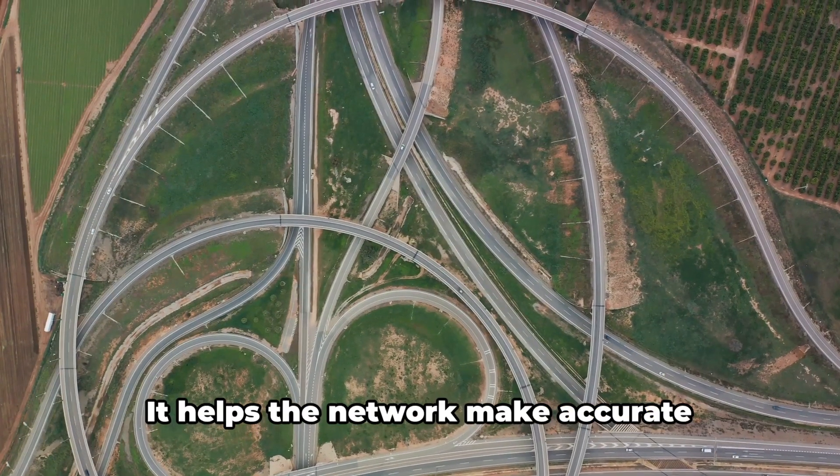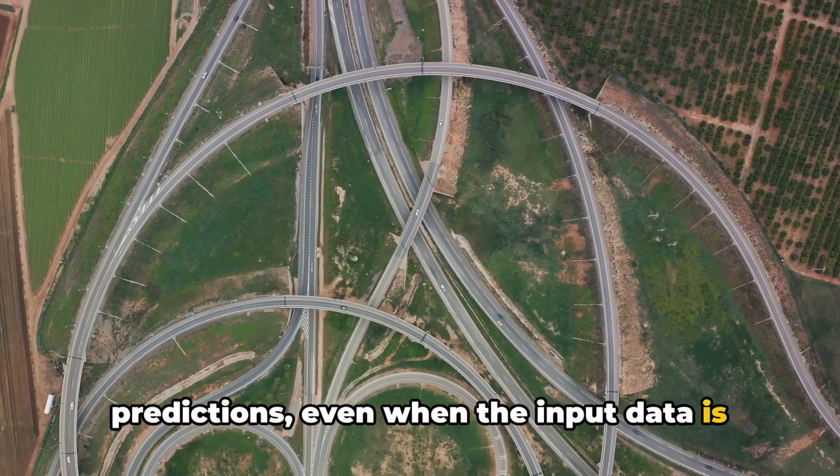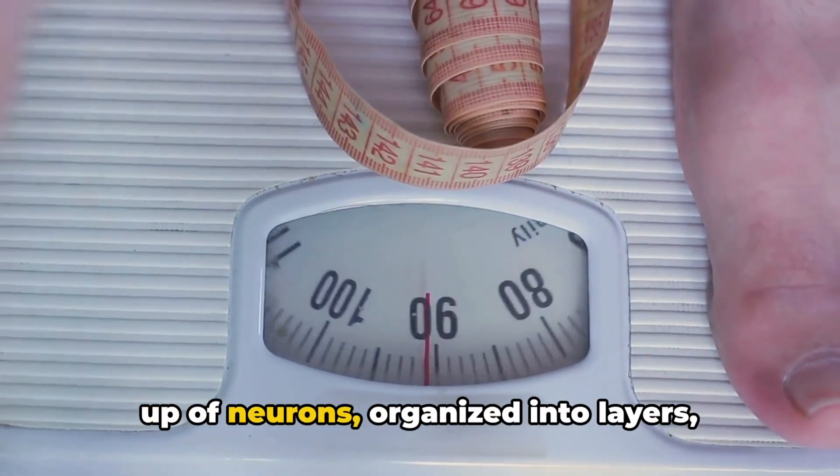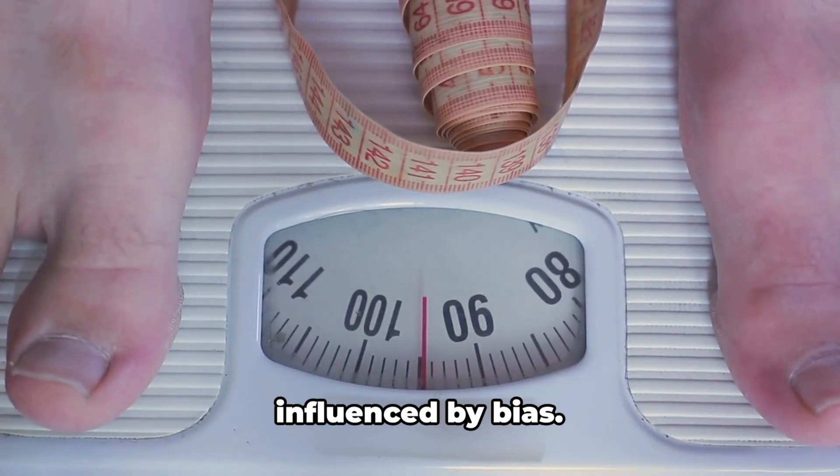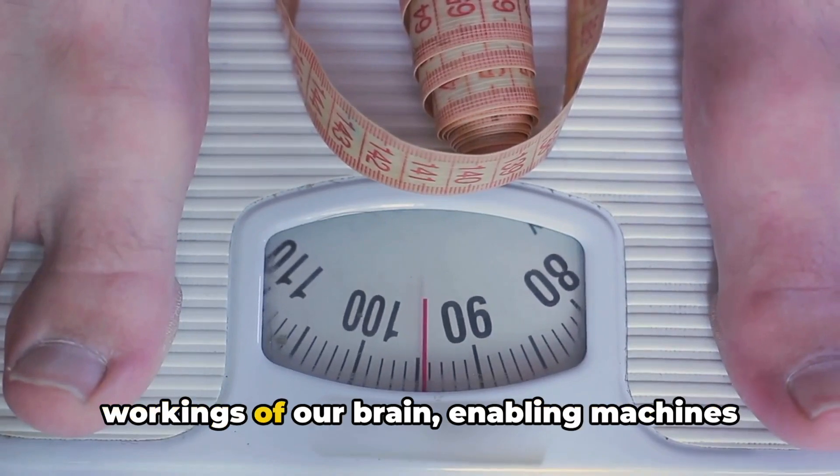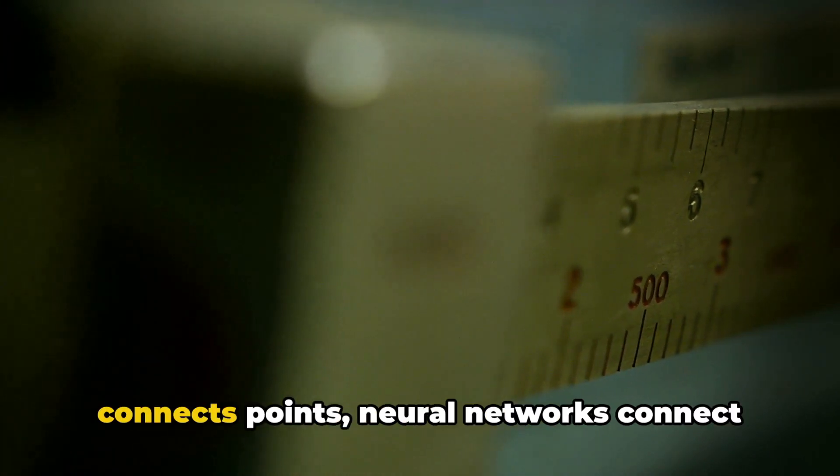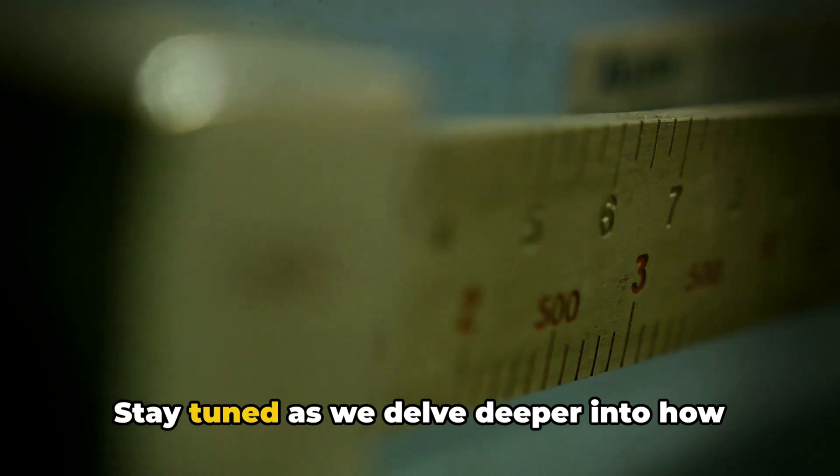It helps the network make accurate predictions even when the input data is not perfect. So to wrap up, neural networks are made up of neurons organized into layers, connected by weighted links and influenced by bias. It's an intricate system that mimics the workings of our brain, enabling machines to learn and make decisions. Just as roads connect cities and a web connects points, neural networks connect data and information.